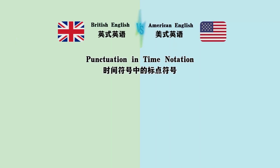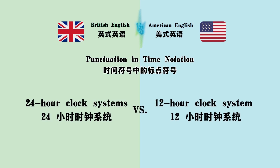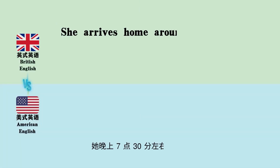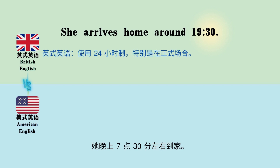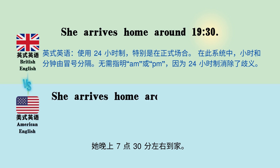Punctuation and time notation: 24-hour clock systems versus 12-hour clock systems. 'She arrives home around 19:30' versus 'She arrives home around 7:30 p.m.'